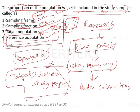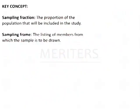Target population is the whole population — like the total number of homeless people. Reference population is similar — it refers to which group we are going to study, like homeless people in Karnataka. That group of people is the reference population.